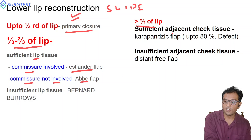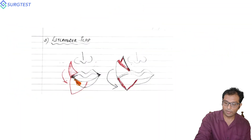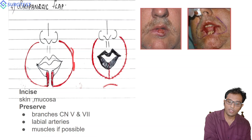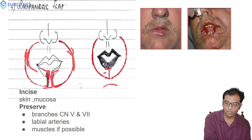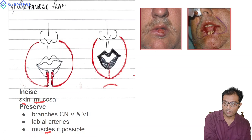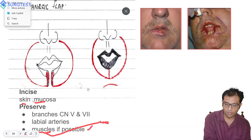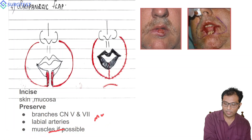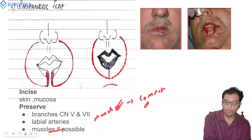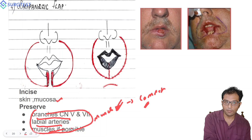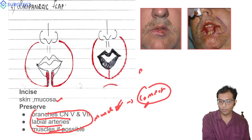The Karapandzic flap involves release incisions made in the cheek area so this area can be mobilized and sutured together. An important point about the Karapandzic flap is that the skin and fat are excised but the muscles are not excised — the muscles are preserved. Since the muscles are preserved, oral competence is also preserved. We must also preserve the labial arteries and nerve supply to the muscles.